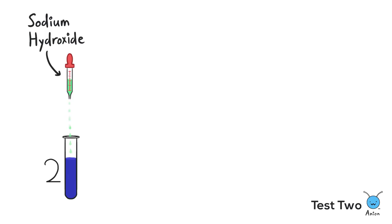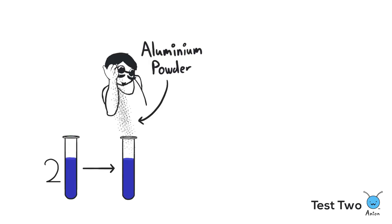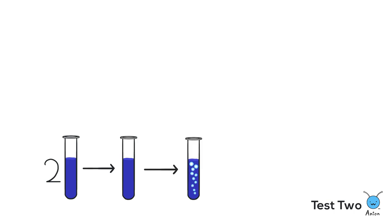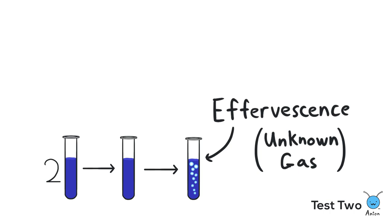For the second test, we test for anions by adding sodium hydroxide and some aluminum powder to sample-2. Bubbles of gas form, also known as effervescence, is observed. Since an unknown gas was produced, we will have to conduct the third test to find out the identity of the gas.